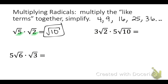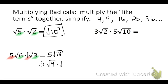Next we have 5 square root 6 times square root 3. Anytime there's no number in front of a square root, put a 1. The like terms to multiply are the coefficients 5 and 1, and the radicands 6 and 3. 5 times 1 is 5, and 6 times 3 is 18. Looking at our list of perfect squares, 9 is the only one that divides 18. So we rewrite as 5 times square root 9 times square root 2, because 9 times 2 is 18. The 5 stays outside and we deal with it last.